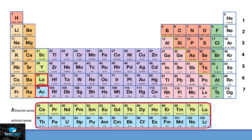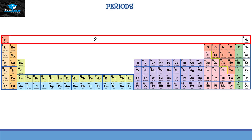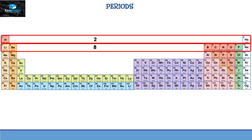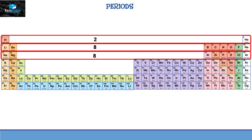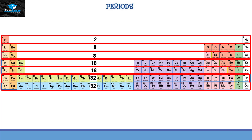These horizontal rows are called the periods of the periodic table. If we put the lanthanoid series and actinoid series inside the table, it will look like this, making it simpler to recognize all elements in those seven rows. The first period contains 2 elements, the second and third contain 8 each, the fourth and fifth contain 18 each, and the last two have 32 elements each.